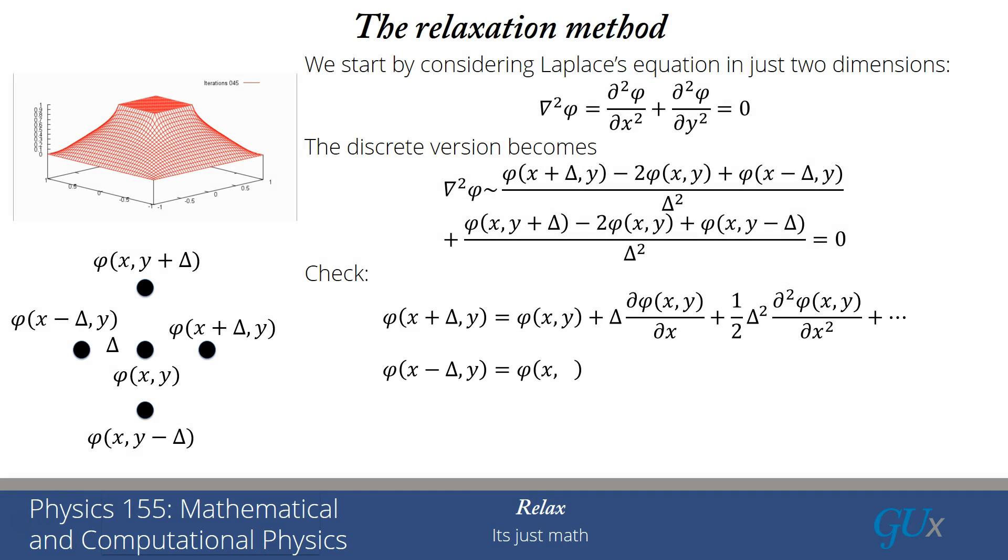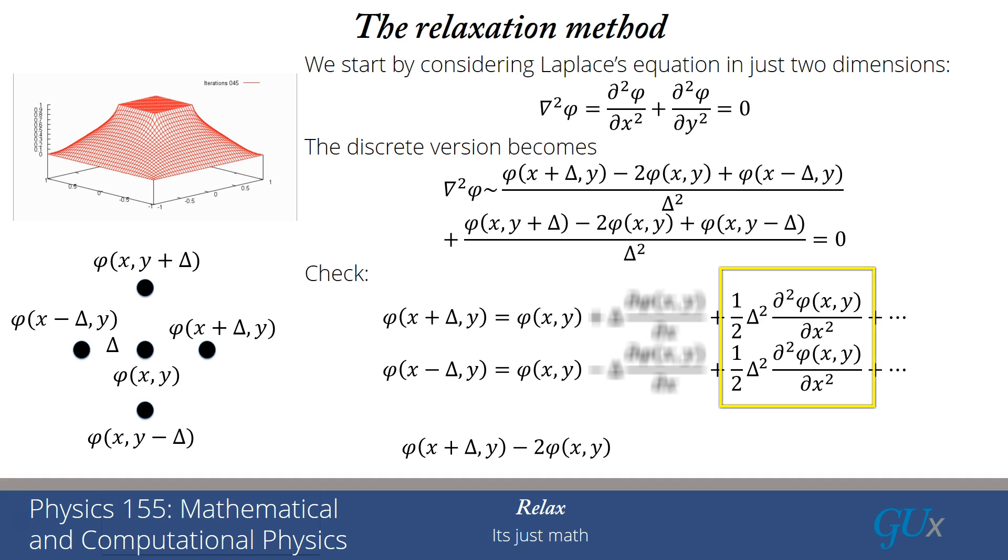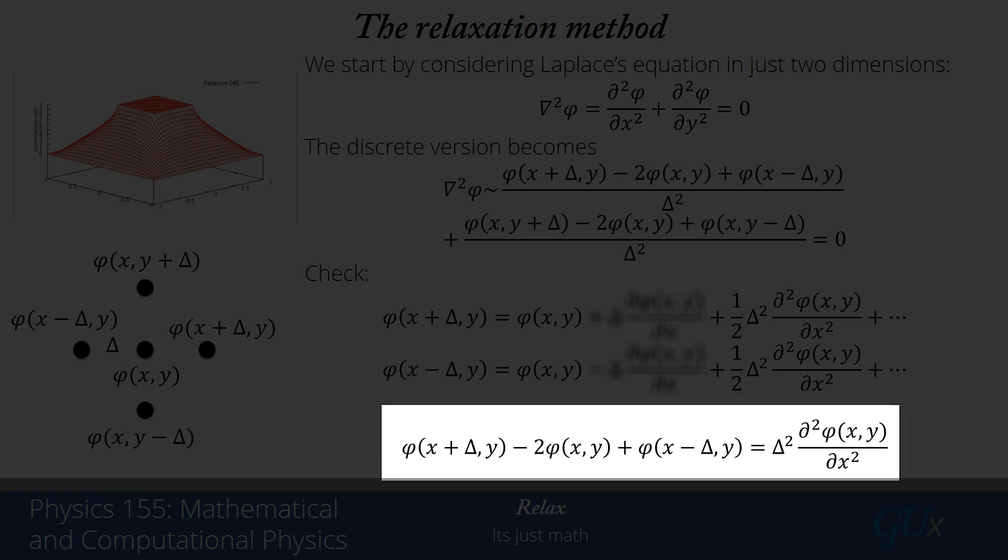Now let me do the exact same thing for phi of x minus delta. Nothing changes except for the middle term where the delta goes to minus delta because minus delta squared is the same as delta squared. Now what we're going to do is take the sum of these two terms. When we add them together you can immediately see the derivative terms are going to cancel. I'm going to be left with two of the phi of x, y terms, and I'm going to be left with a second derivative multiplied by delta squared. So if I take that and move the two phi of x, y terms to the left hand side, I get phi of x plus delta, y minus two phi of x, y plus phi of x minus delta, y. And that is just left with the sum of the last two terms, which is delta squared times the second derivative of phi with respect to x squared. I get the second derivative then by dividing the whole thing by delta squared. But lo and behold, that was the formula that I said was the approximation to the second derivative of phi with respect to x squared.